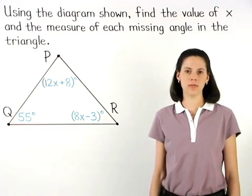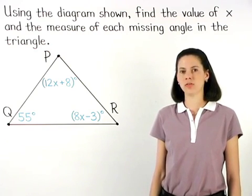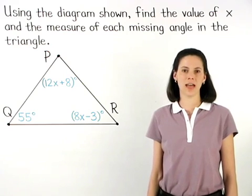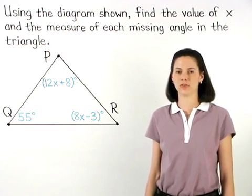Remember from the previous example that the measures of the angles of a triangle always add to 180 degrees.